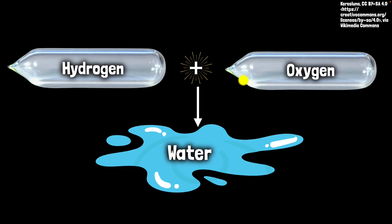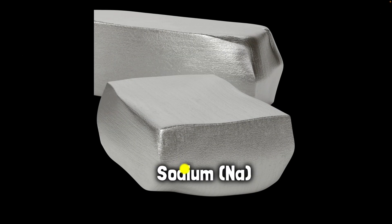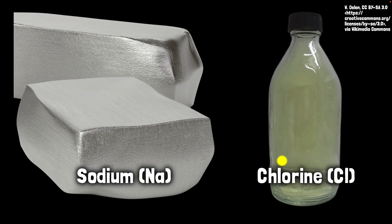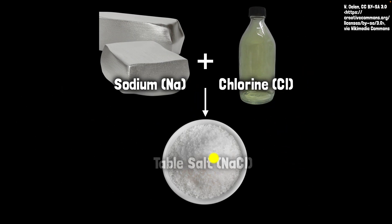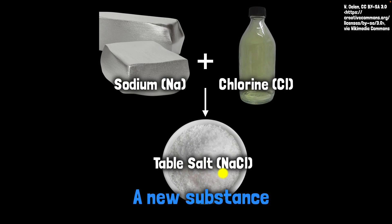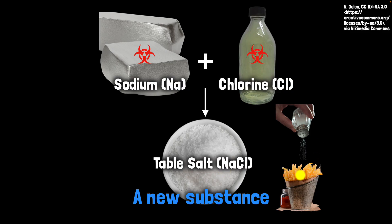We call this a chemical change — you might also say it's a chemical reaction. We say hydrogen is reacting with oxygen to produce water. Here's another example: if you take sodium, a squishy metal but extremely harmful to touch, and make it react with chlorine, a green gas which is also harmful, you get a completely new substance — table salt. And what's interesting is that although these two are extremely harmful, table salt is not. You put it on french fries and eat it. So again, this is a chemical reaction; we're producing completely new substances.